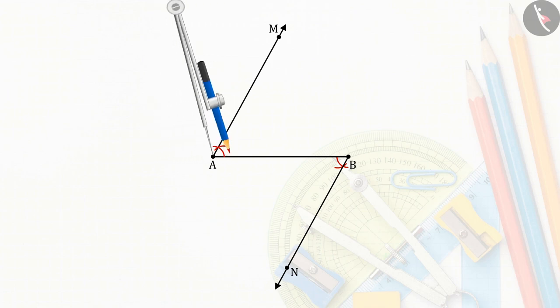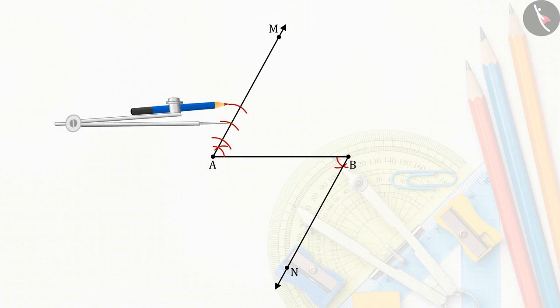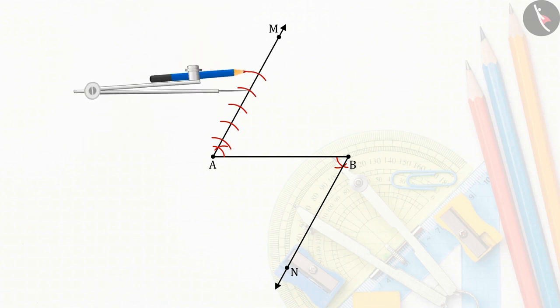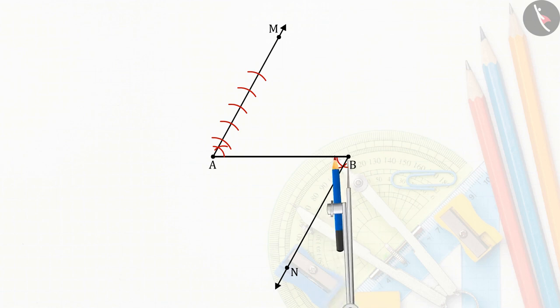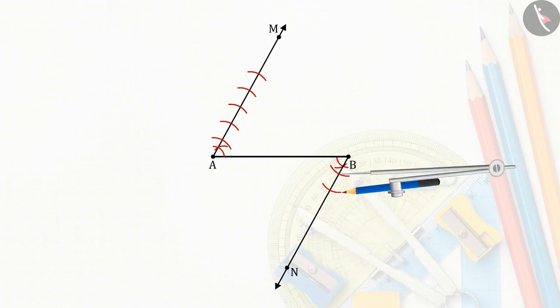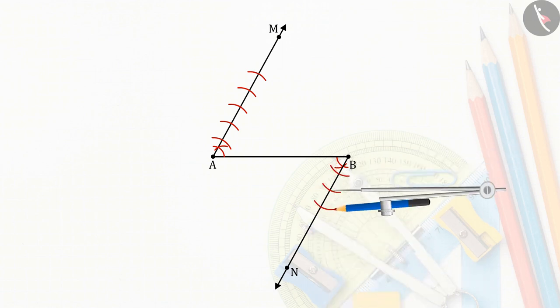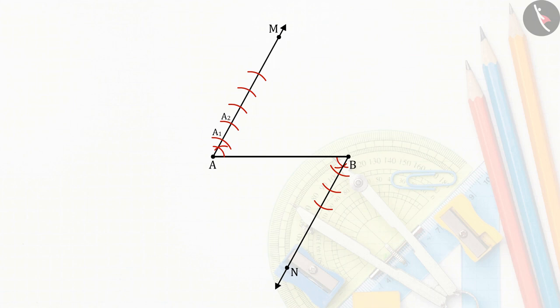Now, on ray AM, mark 5 arcs of equal radius. Now, on ray BN, mark 3 arcs of equal radius, which are named A1, A2, A3, A4, A5 and B1, B2, B3 respectively.